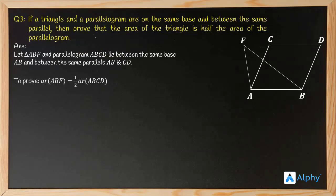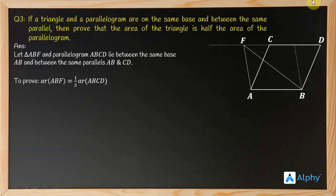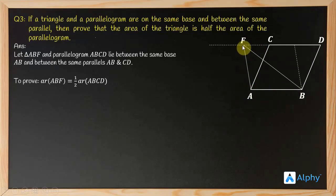We have to prove that the area of triangle ABF is equal to half the area of parallelogram ABCD. To do this, we need to find the parallelogram associated with this triangle — that is, we draw two lines: one parallel to side AF and one parallel to side AB, to get the parallelogram associated with this triangle.